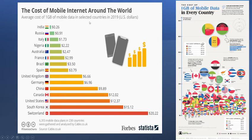It's the cost of 1 GB of mobile data in selected countries in 2019. We see that India is on the lowest side and Finland is put on the highest side. They checked 6,313 mobile data plans, and this data is provided by cable.co.uk to different people around the world about the costing.